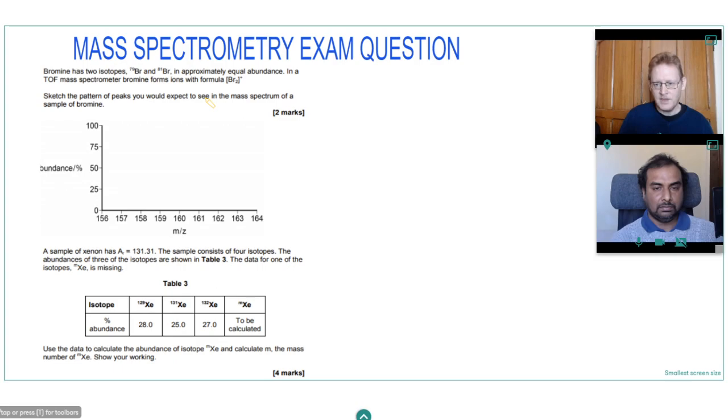So we know bromine Br2 will consist of two different bromine atoms. And I think the best way of demonstrating this is to do a sample space diagram, as we'd say in maths. And because one bromine atom is 79, the other is 81. And the other bromine that it's forming a bond with could be 79 or 81 as well.